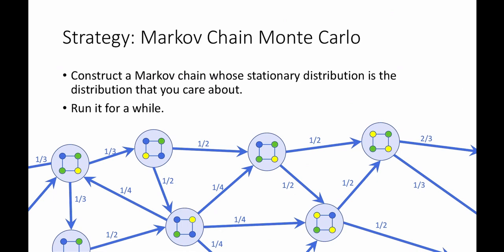Once we've constructed such a Markov chain, we'll just run it for a while. The fundamental theorem of Markov chains says that, provided the Markov chain is aperiodic, irreducible, and has a finite state space, it will eventually converge to this distribution. Thus, if we run it for a while and output whatever coloring comes out, that'll be at least pretty close to the uniform distribution, or whatever distribution we cared about.